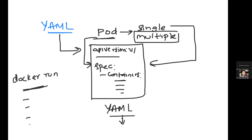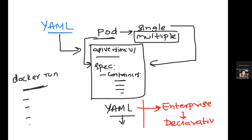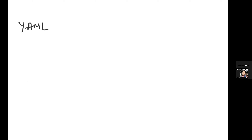You might ask: if things work well with Docker containers, why has Kubernetes introduced this complexity of YAML files? The answer is that Kubernetes is an enterprise-level platform and it wants to bring declarative capabilities and standardization. In Kubernetes, everything is dealt with through YAML files — whether it's pod resources, deployment resources, or services. Everything will be written in YAML files only.